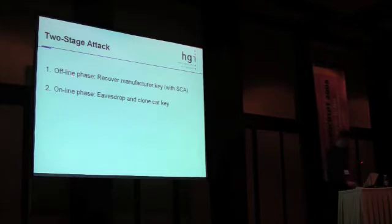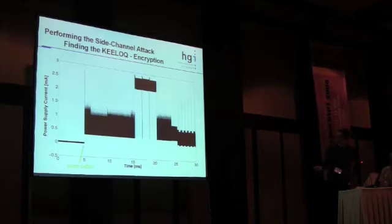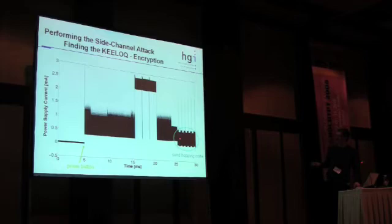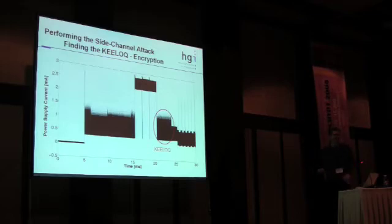How does this work? This is an actual power curve from a retired Keeloq-based remote. When you push the button, the small microprocessor or ASIC starts to compute. Here we actually see the RF part becoming active and something being sent over the air. Here we write to the EEPROM with higher voltage. This is where Keeloq encryption actually takes place. It took us one month to figure that out.